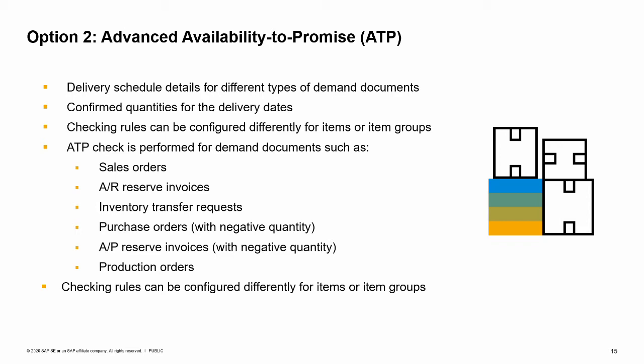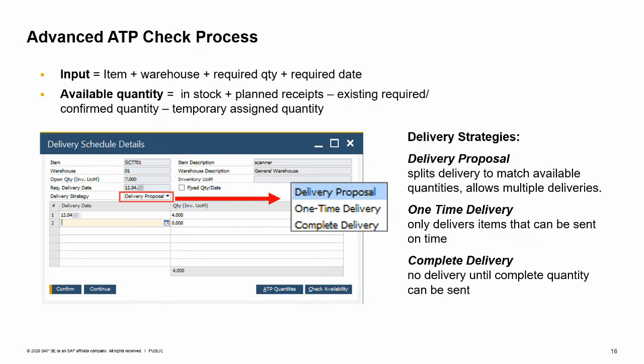The SAP Business One version for SAP HANA has a configuration option to turn on the advanced availability to promise. This option supports delivery schedule details for different types of documents that create demand and have a potential outflow. The advanced ATP confirms quantity for the delivery dates and reserves the information on availability. The ATP check is performed for demand documents such as sales orders and AR reserve invoices with positive quantities, inventory transfer requests, purchase orders and AP reserve invoices with negative quantities, and production orders.